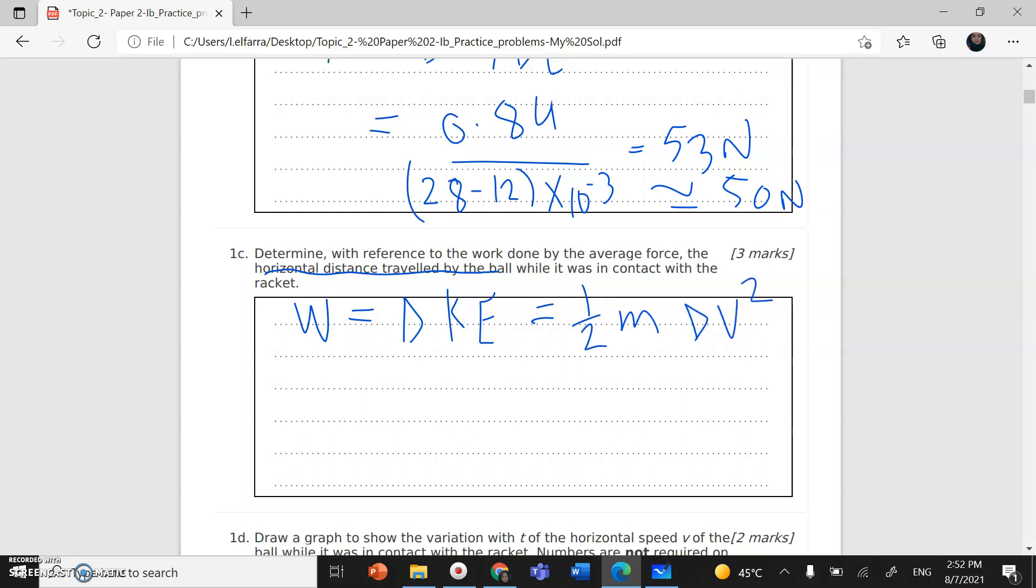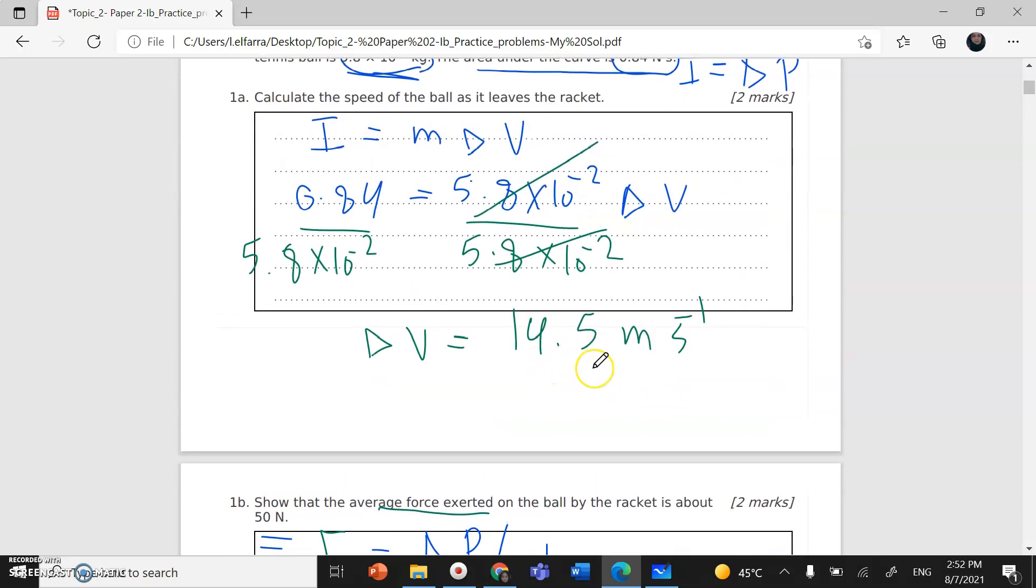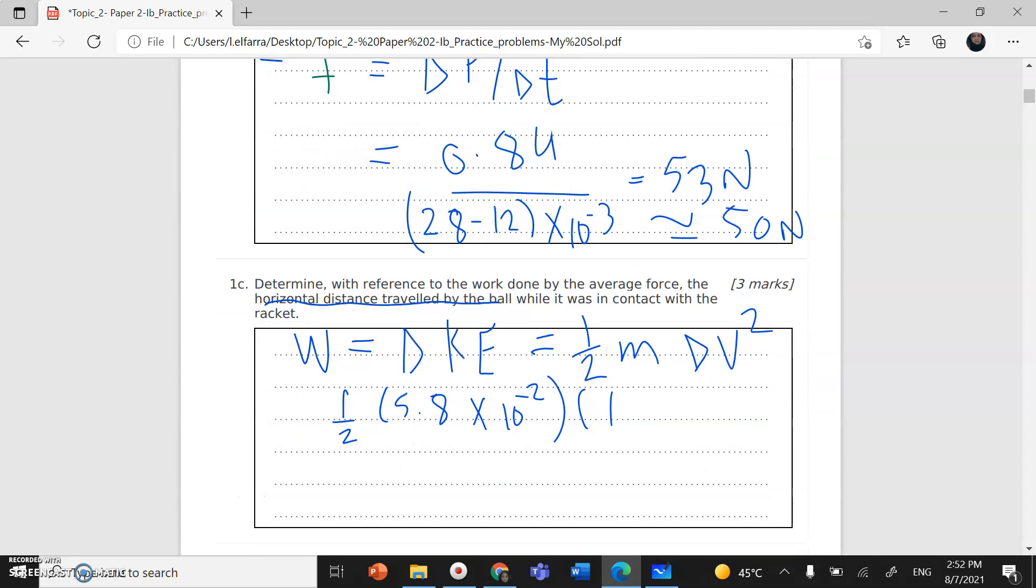m is 5.8 times 10 to the power negative 2, and the velocity from the same question is 14.5, so 14.5 squared. If I calculate this, I should get 6.1 joules.